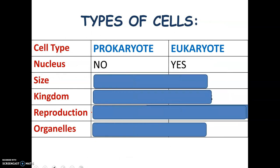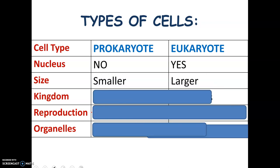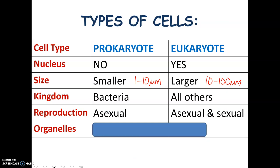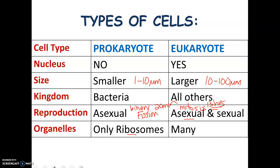Prokaryotes and eukaryotes: prokaryotes do not have a nucleus; eukaryotes do. Prokaryotes are small — about 1 to 10 micrometers — whereas eukaryotic cells are usually 10 to 100 micrometers, so much bigger. Prokaryotes are bacteria; eukaryotes are all the other kingdoms — plant, animal, fungus. Reproduction in prokaryotic cells is asexual via binary fission, which takes about 20 minutes. Eukaryotic asexual reproduction via mitosis is much more complicated and takes about 13 hours. The only organelles in prokaryotic cells are ribosomes, but eukaryotic cells have many organelles — rough and smooth ER, Golgi bodies, vacuoles, mitochondria, chloroplasts — we'll go through all of them.